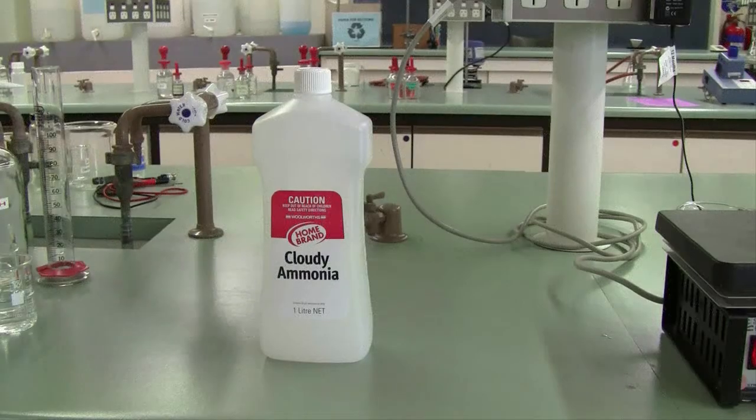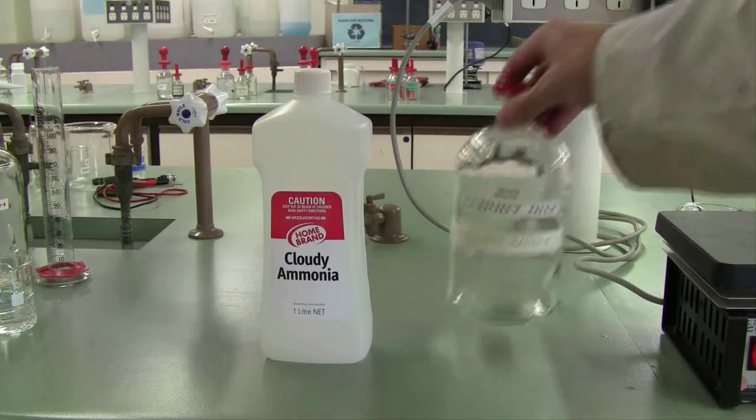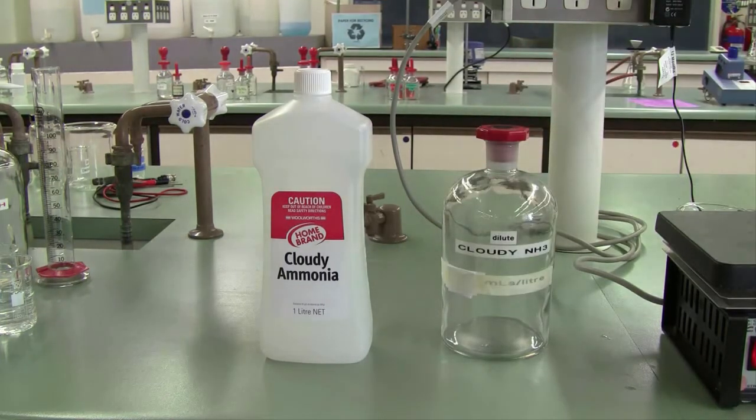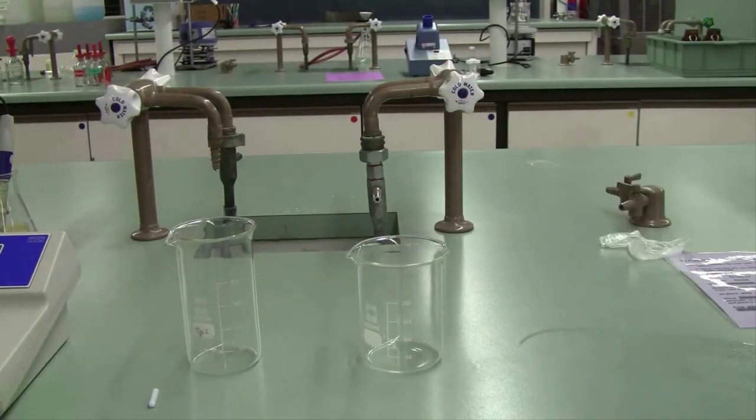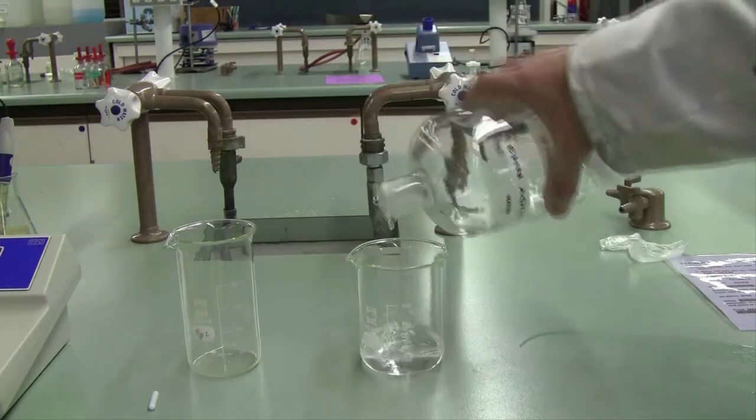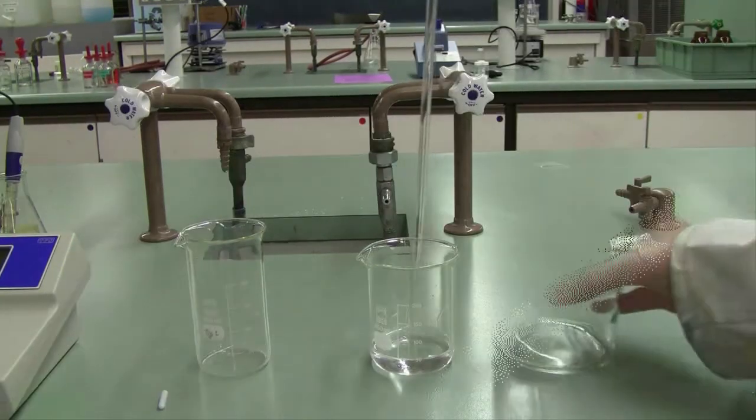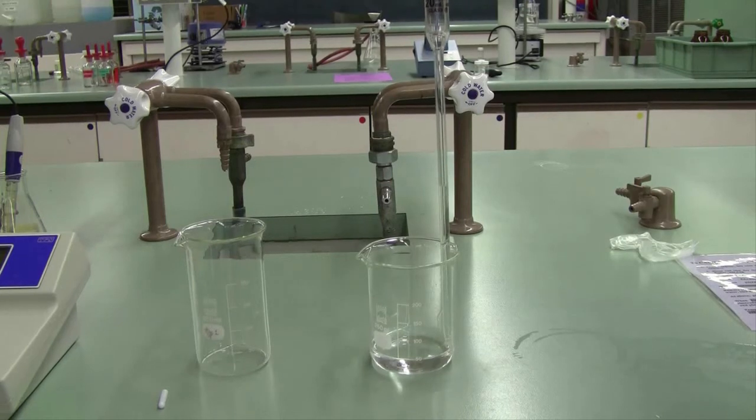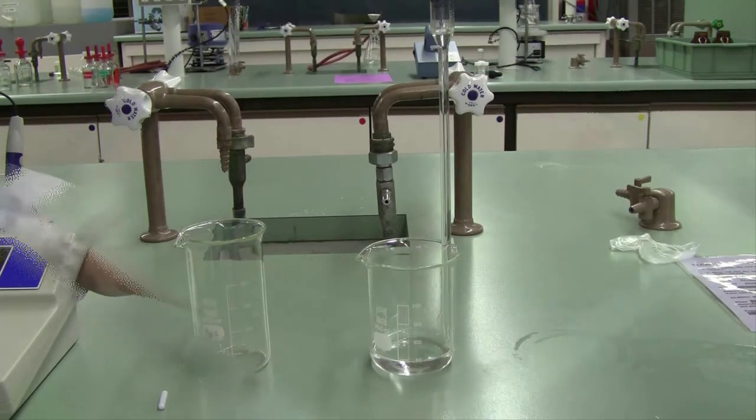The second half of your experiment involves the titration of a pre-diluted solution of a commercial product, cloudy ammonia. Take some of the pre-diluted ammonia solution, note the dilution factor. Take a 20 ml aliquot and deliver it into a tall narrow beaker.